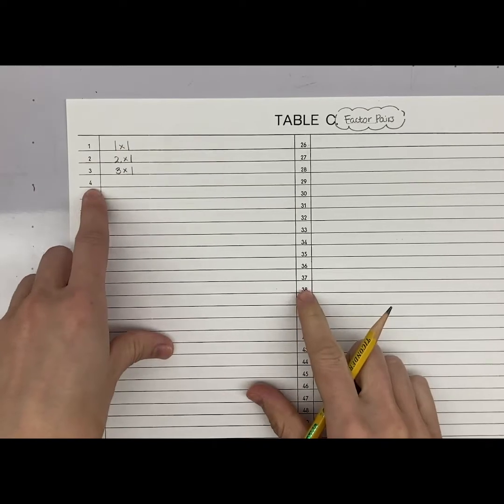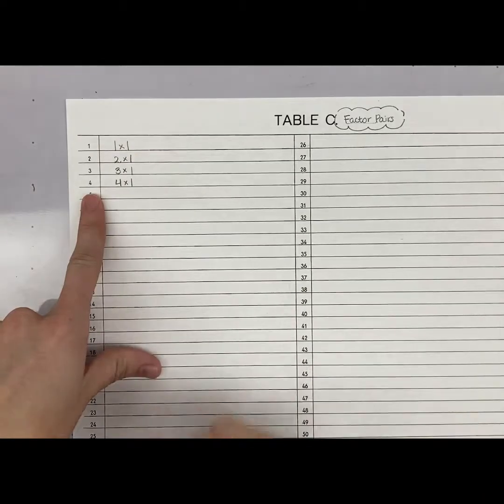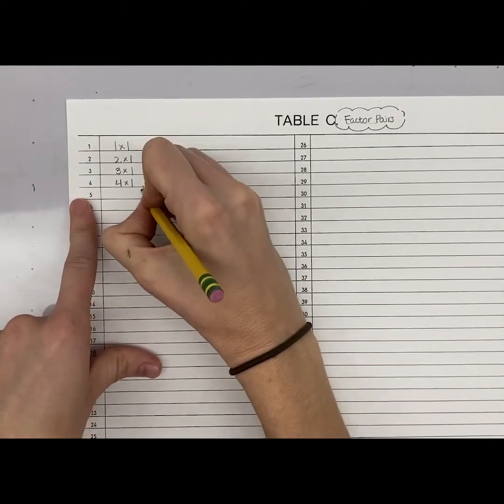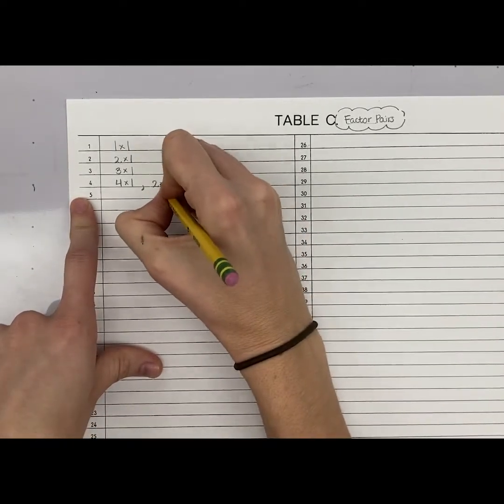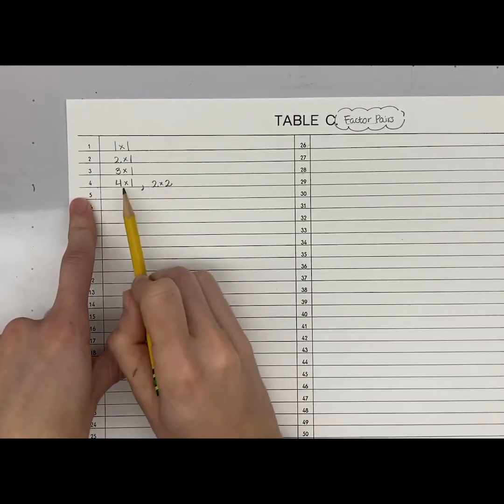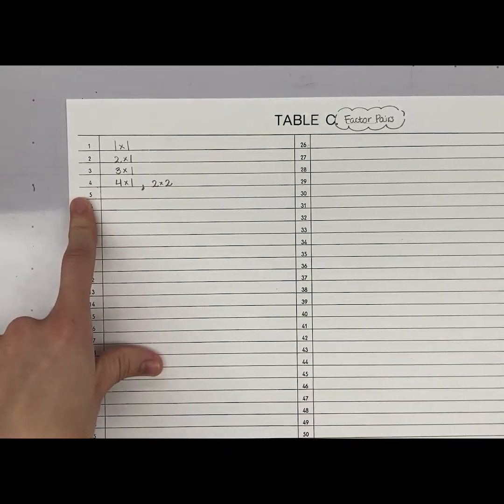But 4, I know for a fact, I can do 4 taken 1 time always, right? I can always do my number times itself. Or I know that 2 taken 2 times will also get me to 4. So, if you come across a multiple that has more than one factor pair, you're going to separate them with a comma.